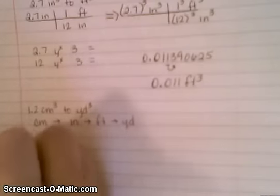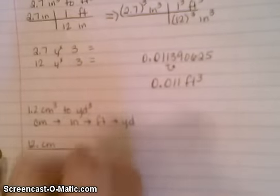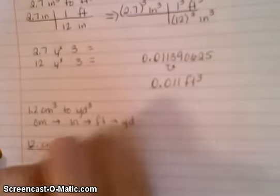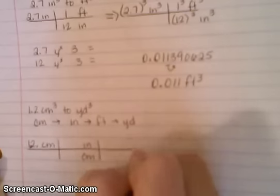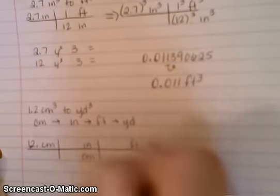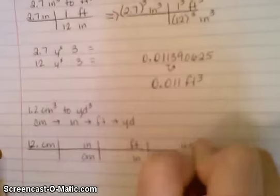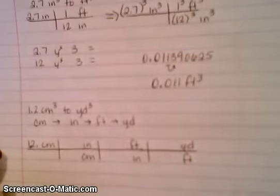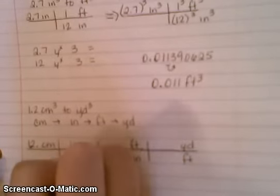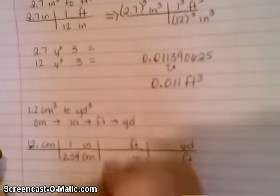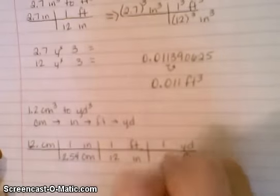So if we set that up, we have 1.2 centimeters. And then I'm going to have to go from centimeters to inches, and then I'm going to have to go from inches to feet, and I'm going to have to go from feet to yards. So how many inches are in a foot? There is 1 inch for every 2.54 centimeters, and then 1 foot there are 12 inches, and in 1 yard there are 3 feet.